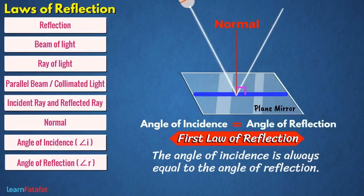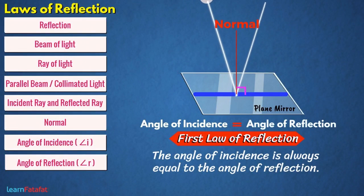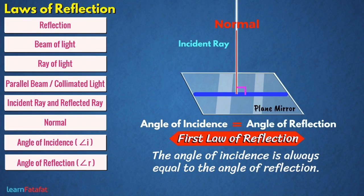If you reduce the incident angle, the reflected angle also changes. A condition reaches when incident angle is zero degree, that is, the incident ray is exactly aligned to the normal. In such a case, the reflected ray travels back over the normal.